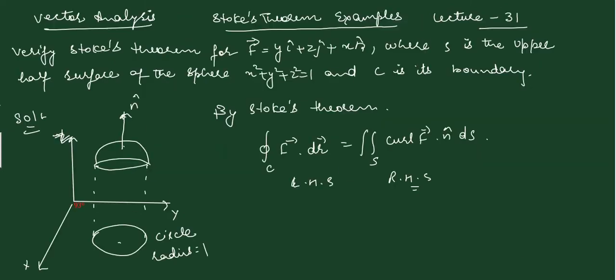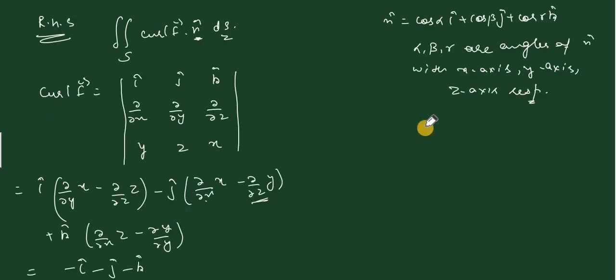N cap basically equals cos alpha i cap plus cos beta j cap plus cos gamma k cap, where alpha, beta, gamma are angles of n cap with x-axis, y-axis, and z-axis respectively. Since the normal is along the z-axis, angles with x and y axes are 90 degrees, and with z-axis is 0 degrees. So n cap equals k cap.